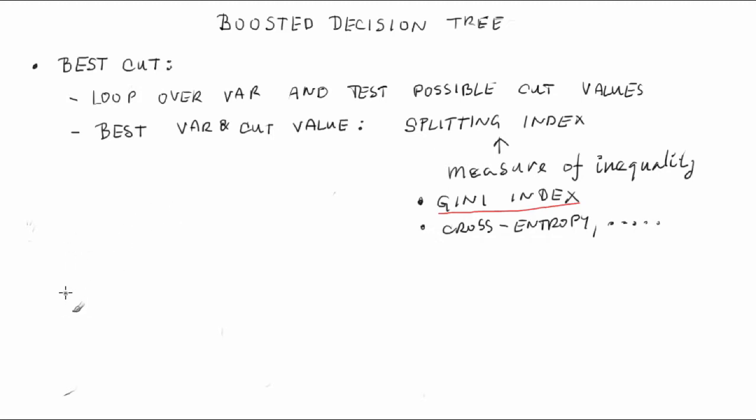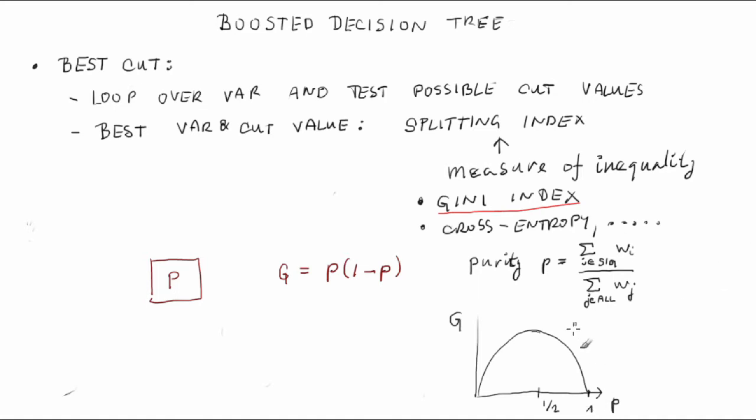For a given block of phase space with a signal purity P, the Gini index is defined by G equals P times 1 minus P. Recall that purity is the number of signal events in a block of phase space divided by the total number of events that are there. P equals sum over J iterating over all signal events W_J over sum over J iterating over all signal and background events in the block of phase space W_J. A low Gini index means a high inequality of signal and background events. Notice that the Gini index is symmetric in the fraction of signal events P and the fraction of background events 1 minus P. This means that we value a cut separating background as much as a cut separating signal.